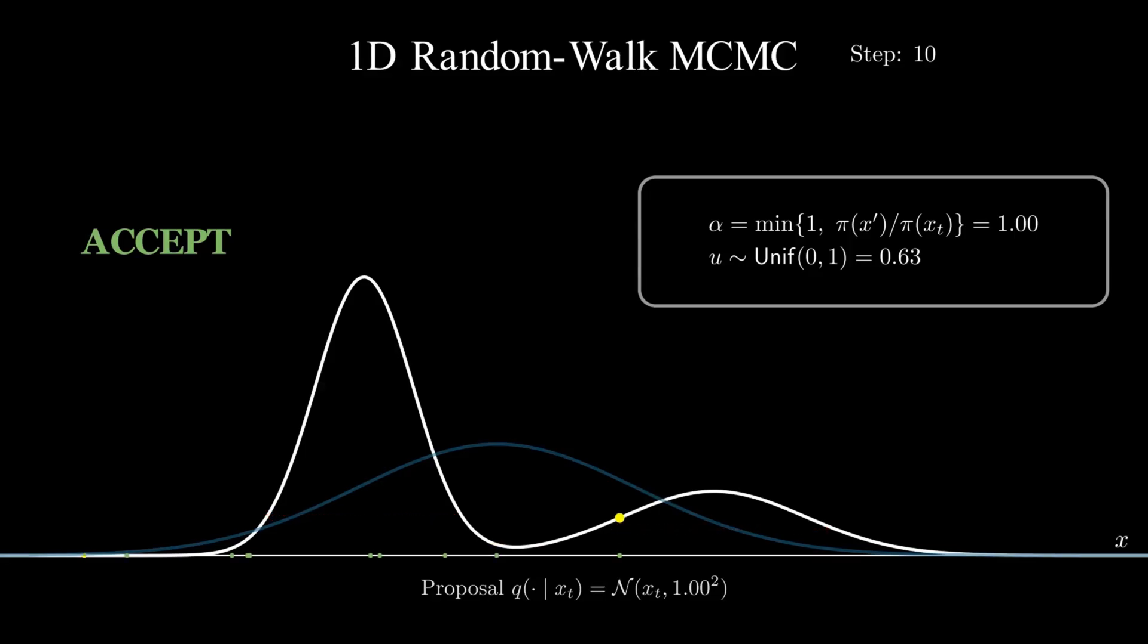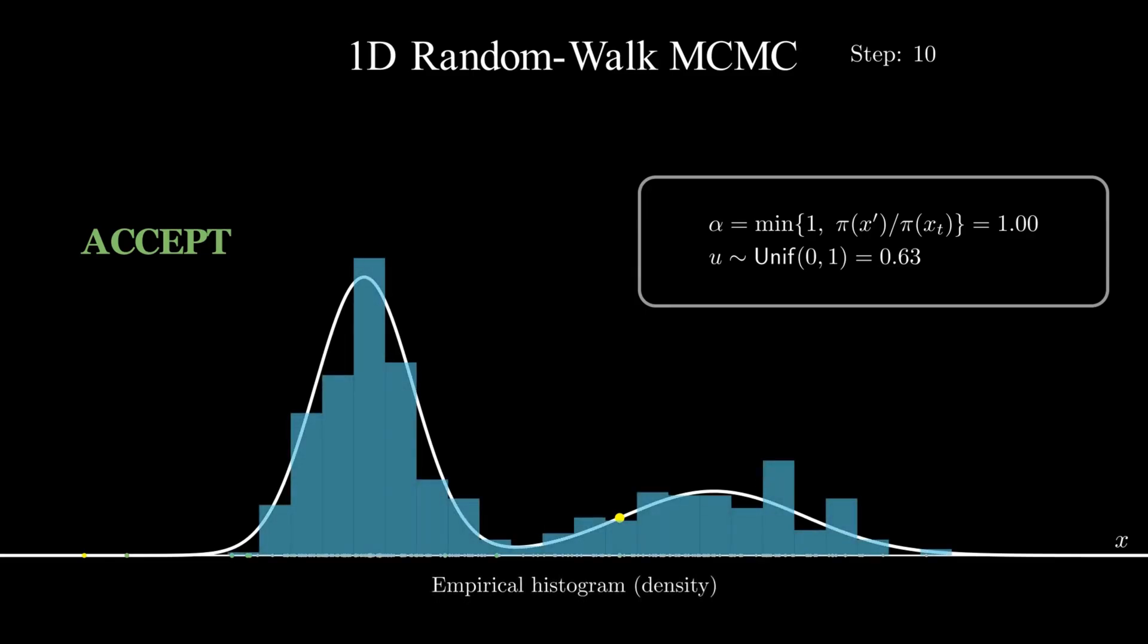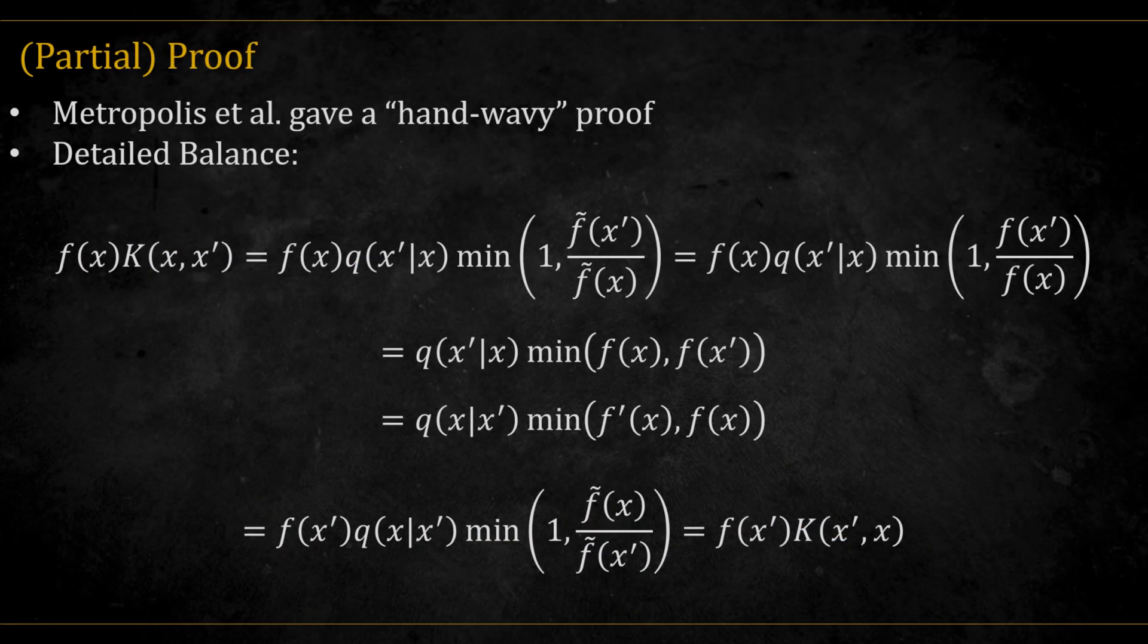If we had continued for many more steps, eventually the sample histogram would look like this. Okay, so let's now try to prove this chain is ergodic and that the limit distribution is the target distribution f.